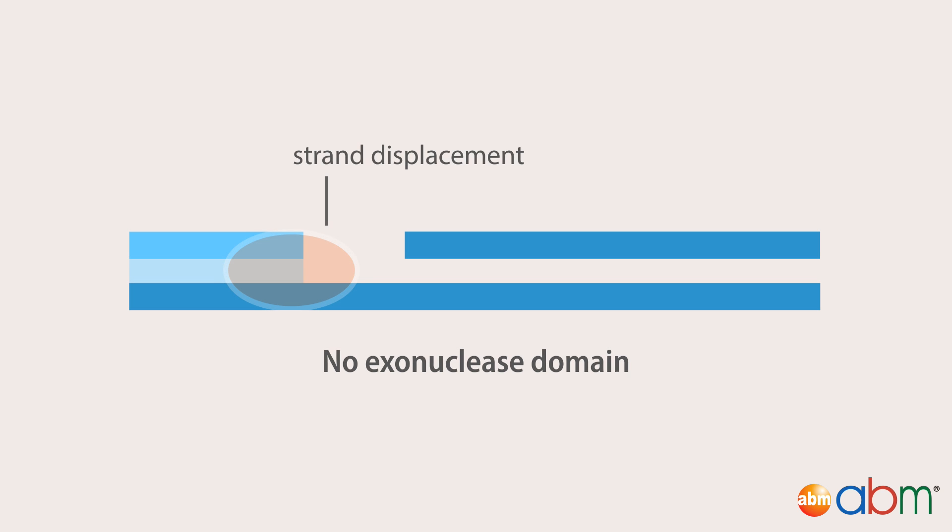Some DNA polymerases lack any exonuclease activity, which allows the extension of a DNA strand at the 3' end to displace the downstream DNA.